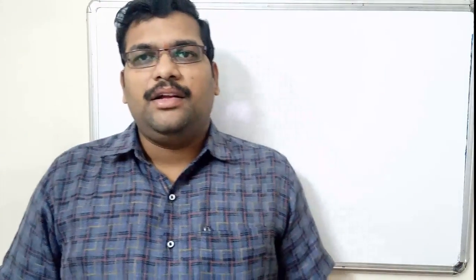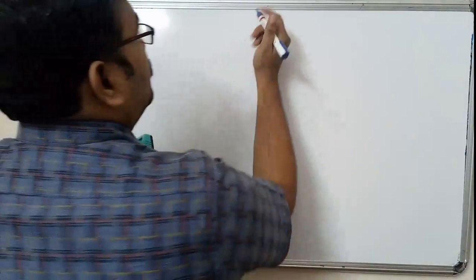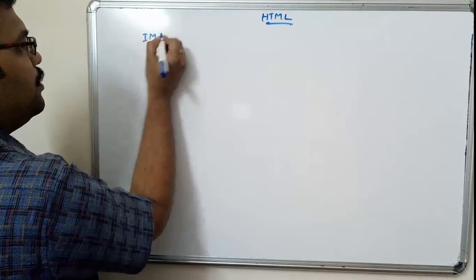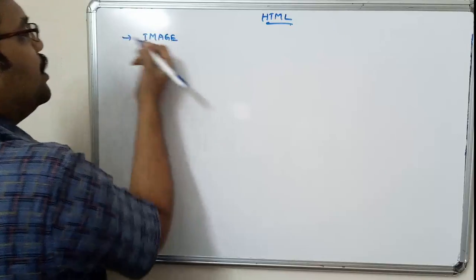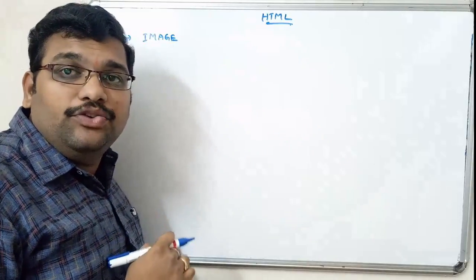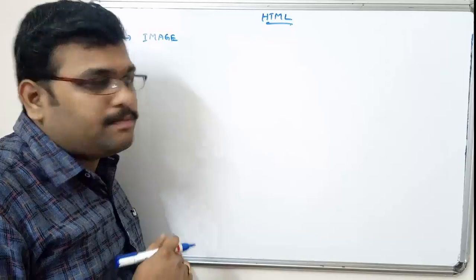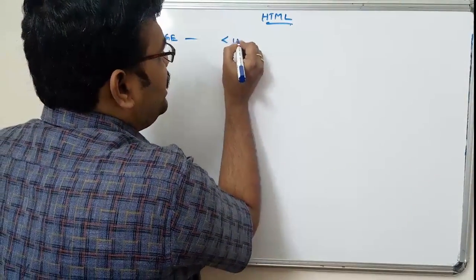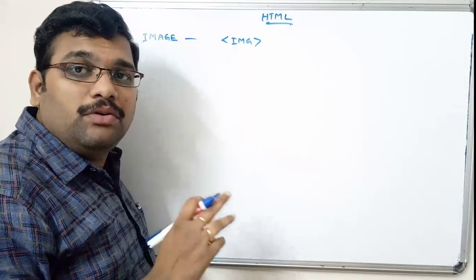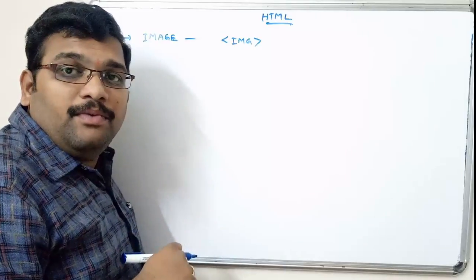Hello friends, welcome back to our channel. In today's session, let's have a look at a few more tags in HTML. First we will see the image tag. As the name itself indicates, this tag is used to display an image on the browser. The tag is IMG, and to display the image on the screen we have a number of attributes.